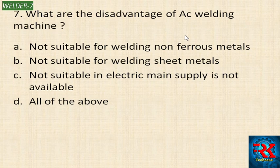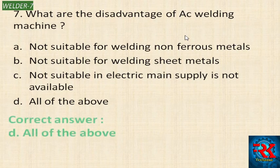What are the disadvantages of an AC welding machine? Options: not suitable for welding non-ferrous metals, not suitable for welding sheet metals, not suitable when electric main supply is not available, or all of the above. The correct answer is all of the above.